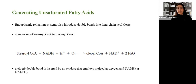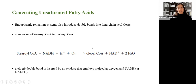Now, what if we want to generate unsaturated fatty acids? The endoplasmic reticulum system is capable of introducing double bonds into long-chain acyl-CoAs. For example, the conversion of stearoyl-CoA into oleoyl-CoA involves introduction of a double bond at carbon-9 — the delta-9 position. This process requires NADH or NADPH.